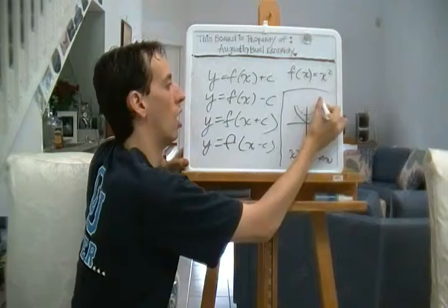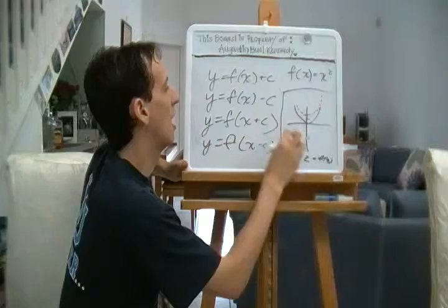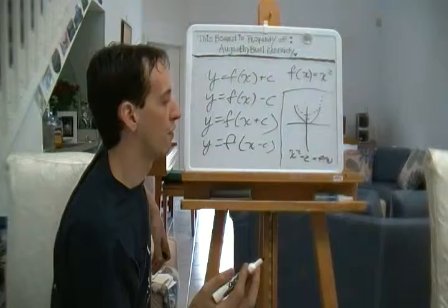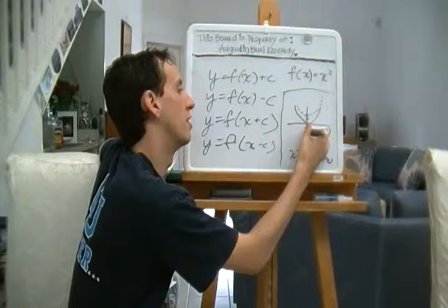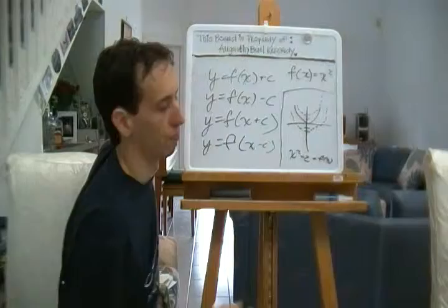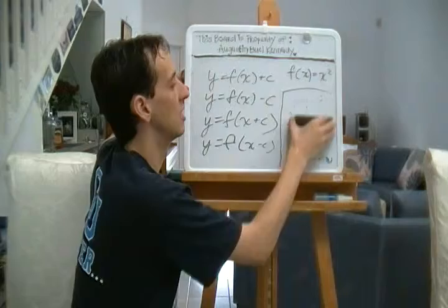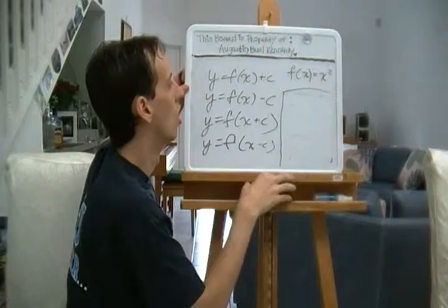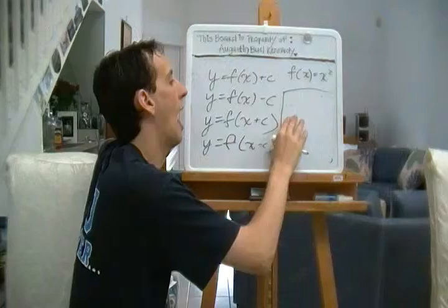If we have X squared plus 2 equals F of X, what that's going to be is it's going to be this parabola shifted up 2. It's kind of like that. If we have F of X equals X squared minus 2, you might assume, correctly, that it's going to be the same parabola but just shifted down 2.